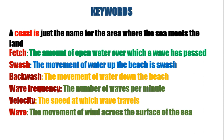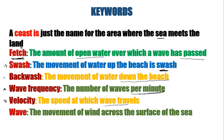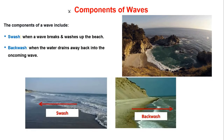What is a coast? A coast is the name for the area where the sea meets the land. Then we have the word fetch, which is the amount of open water over which a wave has passed. Swash is the movement of water up the beach. Backwash is the movement of water down the beach. Wave frequency is the number of waves per minute. Velocity is the speed at which the wave travels. A wave itself is the movement of wind across the surface of the sea.